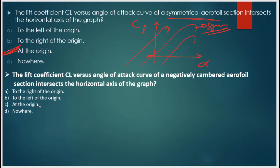Next question: the lift coefficient CL versus angle of attack curve of a negatively cambered airfoil — where does it intersect the horizontal axis of the graph? For a negatively cambered airfoil, the curve intersects the horizontal axis to the right of the origin. So option A is the right answer.